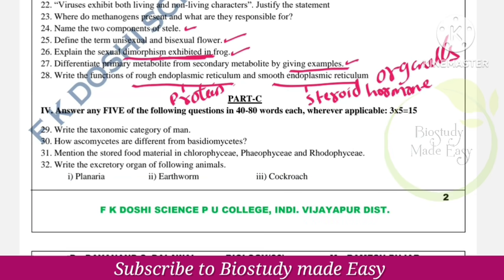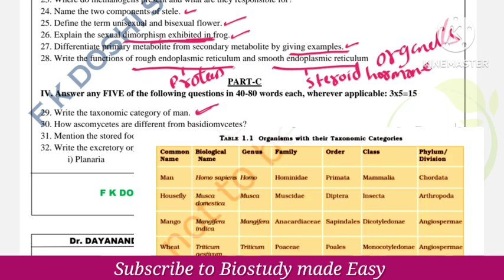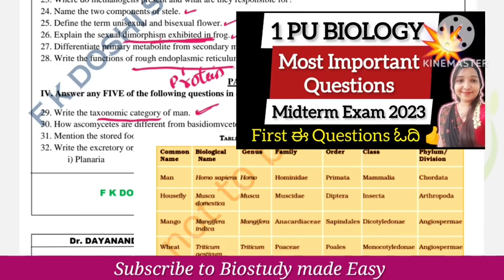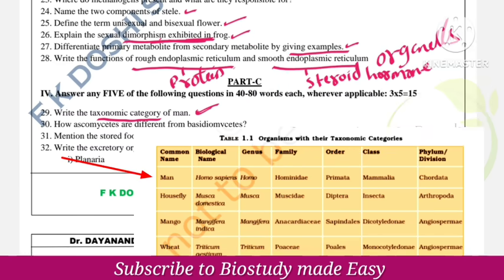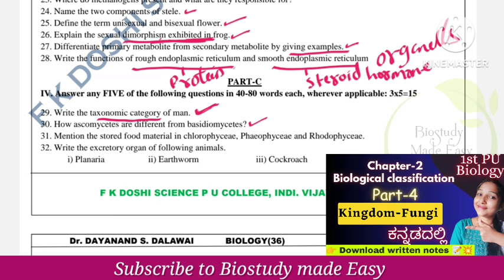Three-mark questions: taxonomic category of man — this is the most important question from the living world chapter. Next: how are Ascomycetes different from Basidiomycetes? This is classification of fungi — an important question.